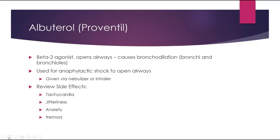Now for anaphylactic shock: albuterol is a beta-2 agonist — beta-2 being the lungs — that causes bronchodilation of the bronchi and bronchioles. It alone will not address anaphylactic shock or change the underlying reaction; it only treats bronchoconstriction as a symptom. It is given via nebulizer or inhaler. Due to some beta-1 overflow, side effects include tachycardia, jitteriness, anxiety, and tremors.